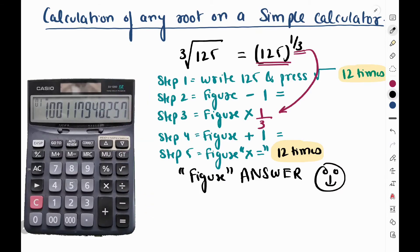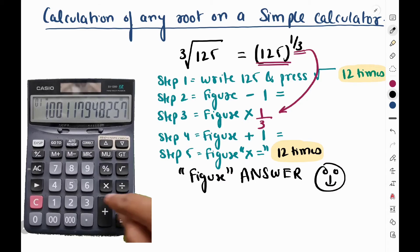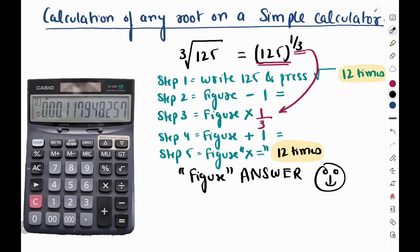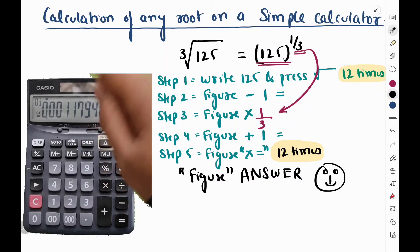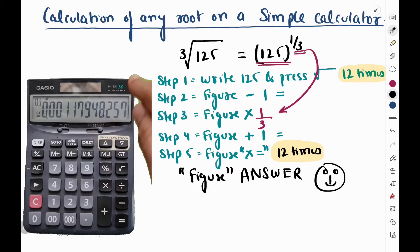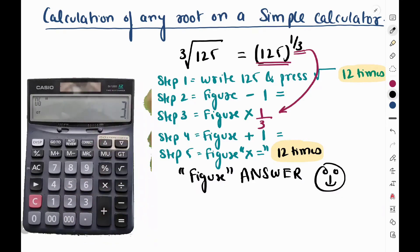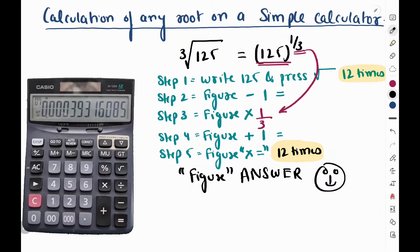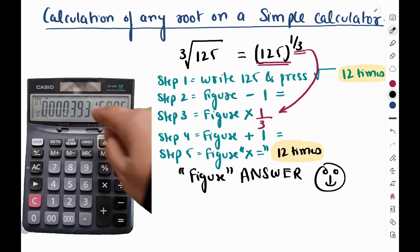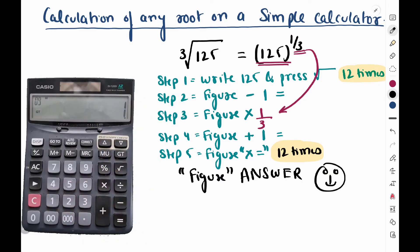12 times I have pressed under root. After this I have to do minus 1. So minus 1 I did. Is equal to. Whatever figure came, I have to multiply it by the root, by the square root. Like one by three in this case. So into one divide by three. Whatever number it is, as it is. Is equal to. Now whatever answer came, I have to do plus one is equal to.